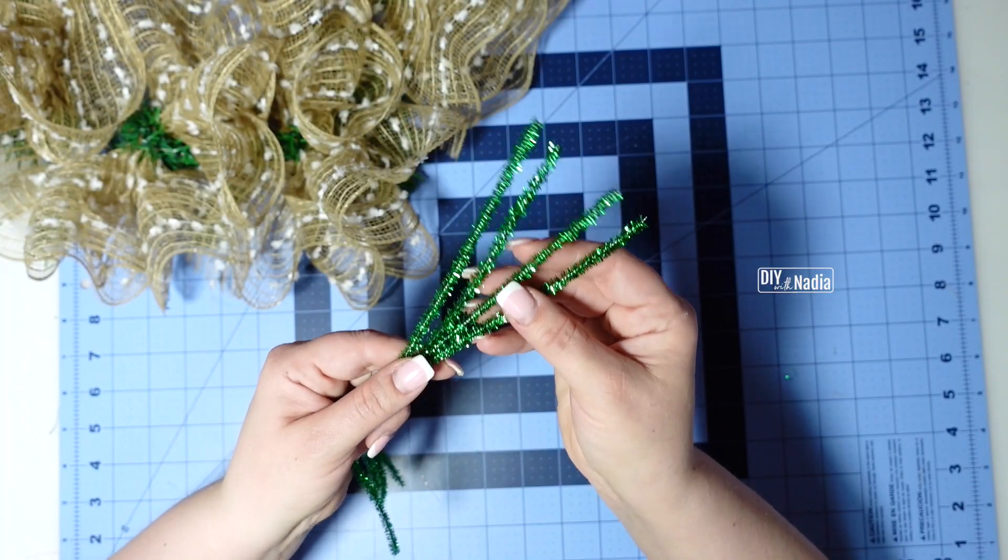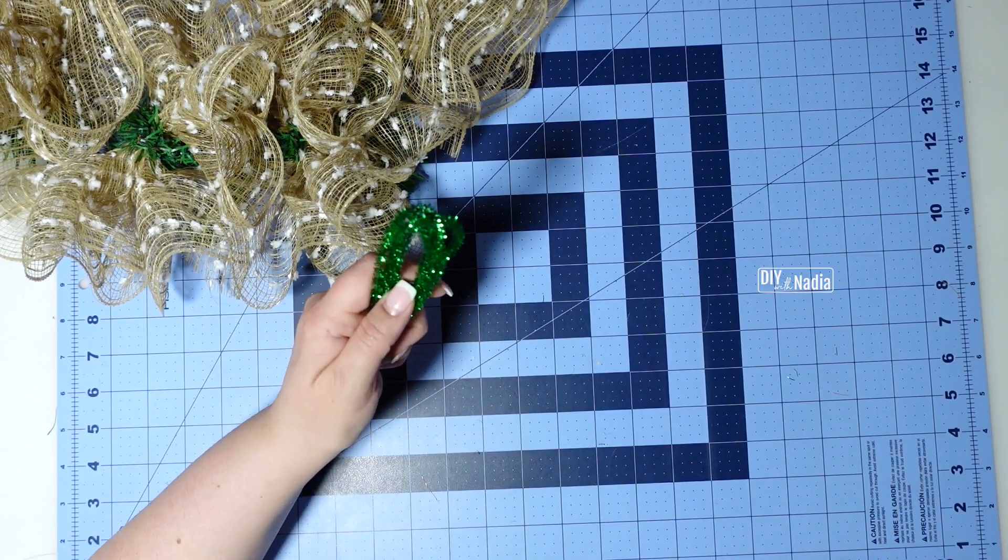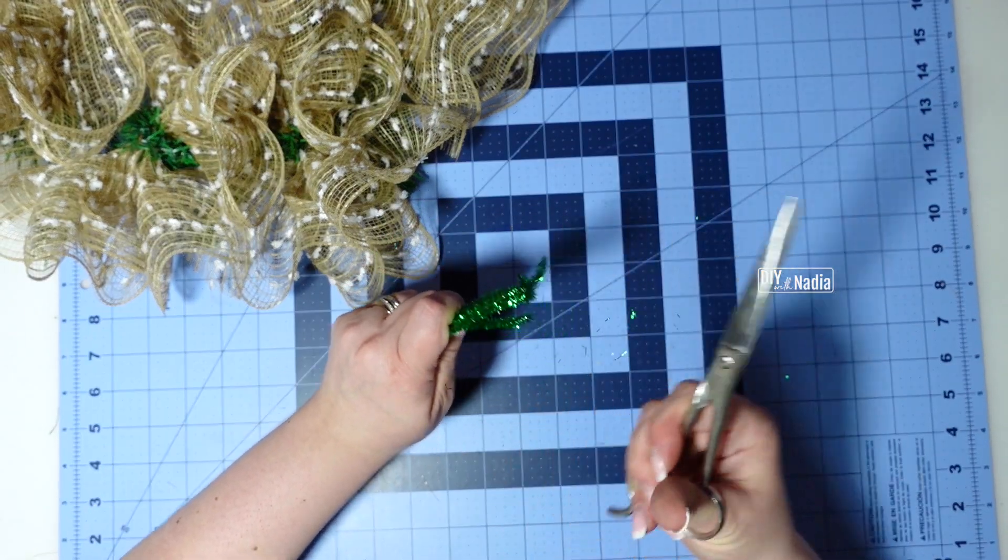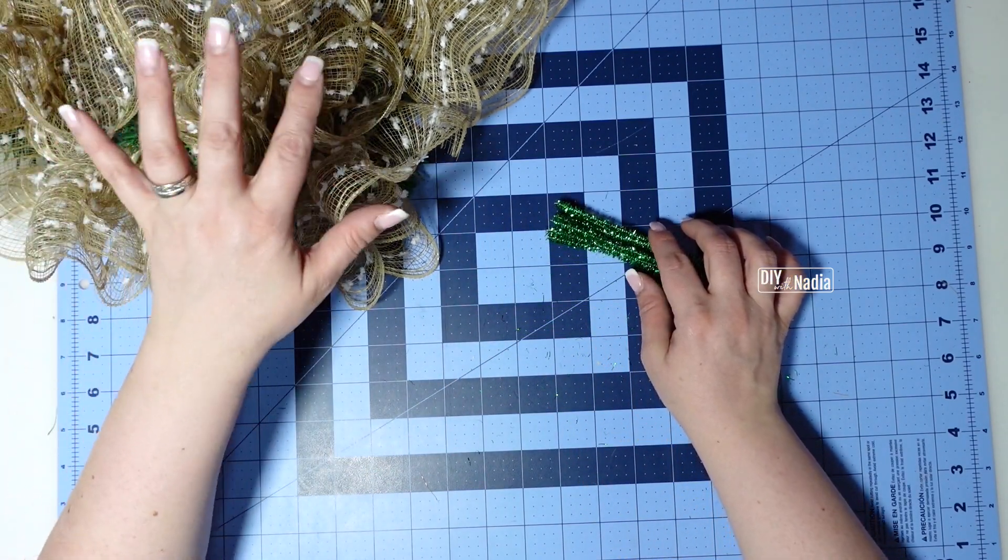Next I'm going to grab four green pipe cleaners and these are 12 inches and I'm going to cut them in half. I'm going to use them to make little bundles to put in the center of each of the curls.